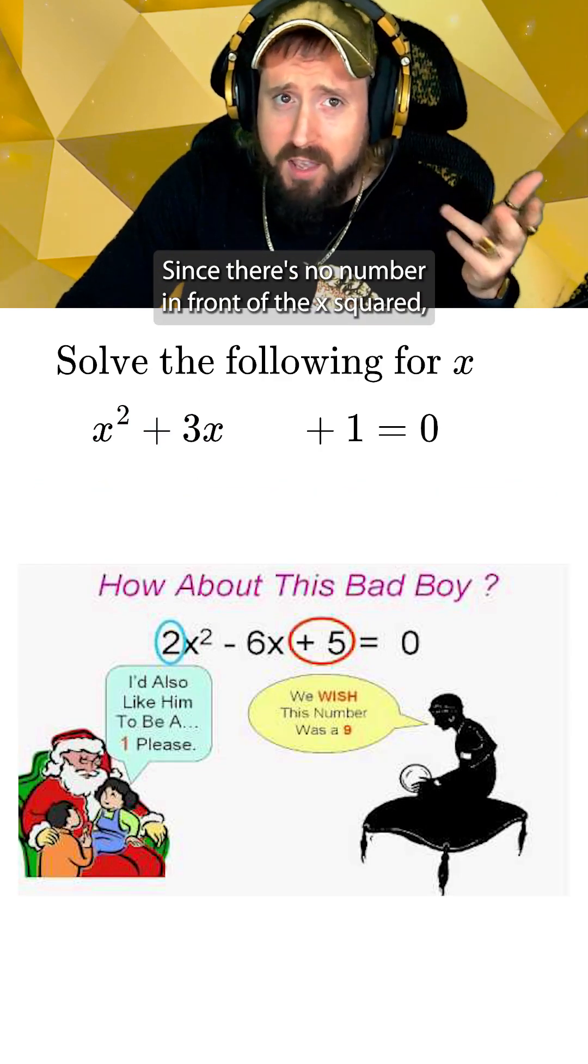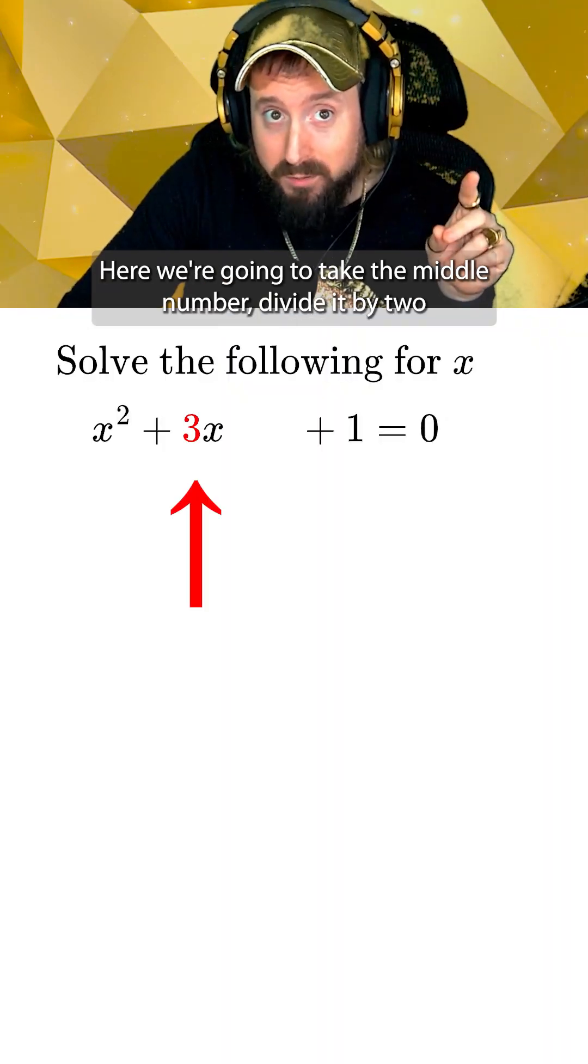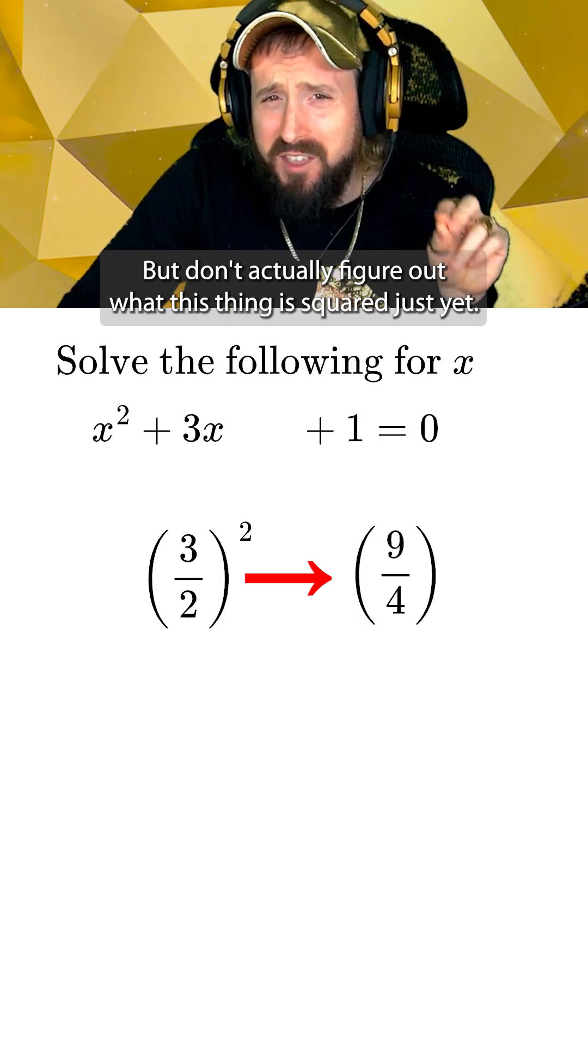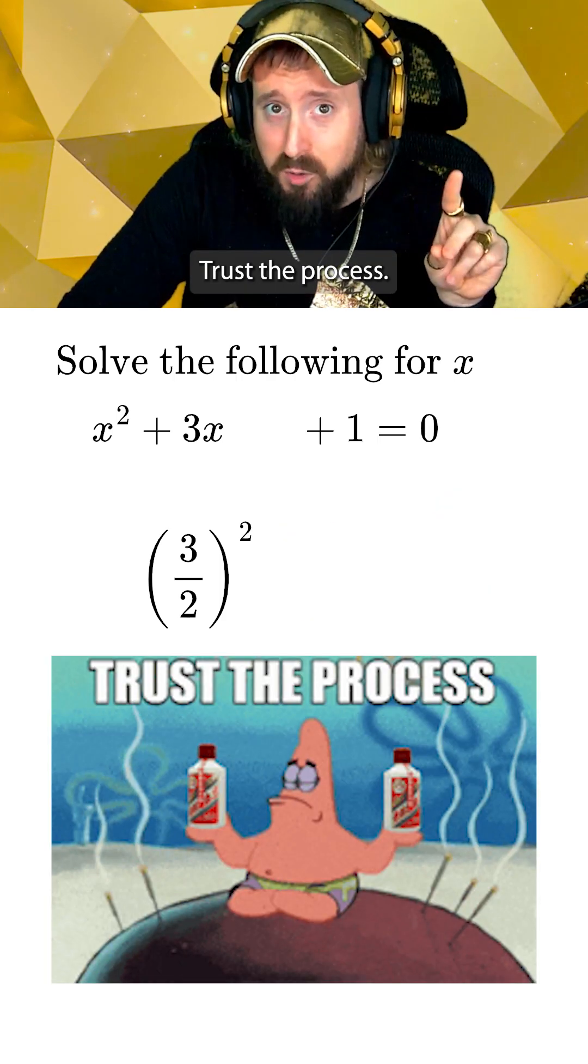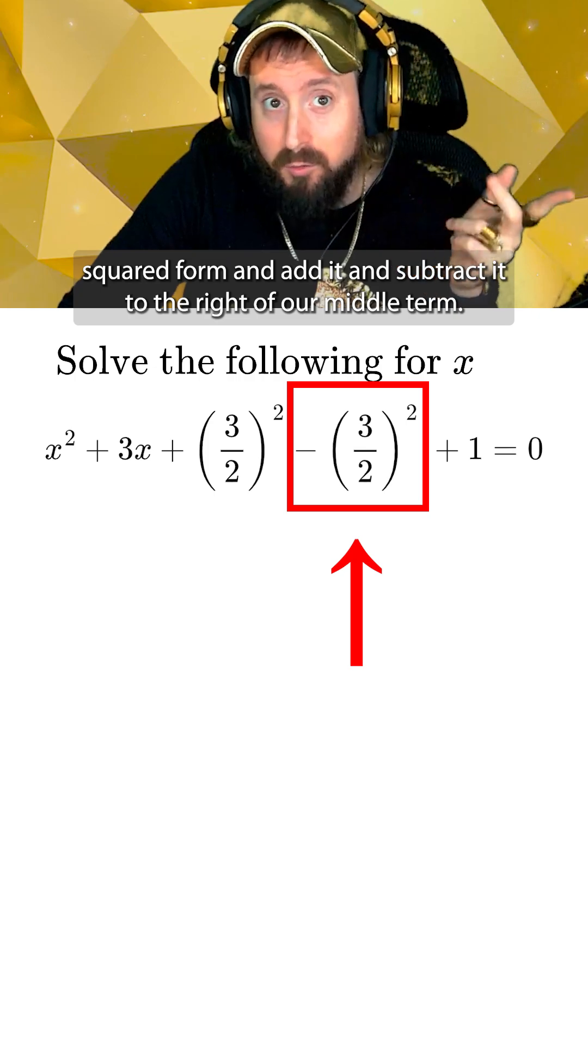Since there's no number in front of the x squared, we can complete the square the easy way. Here we're gonna take the middle number, divide it by 2, and then square it. But don't actually figure out what this thing is squared just yet. Trust the process, leave it in squared form and add it and subtract it to the right of our middle term.